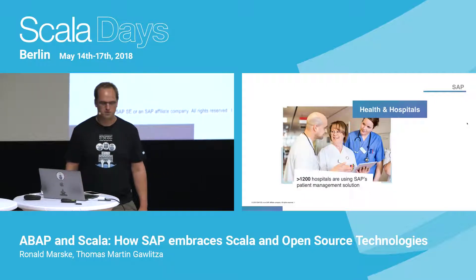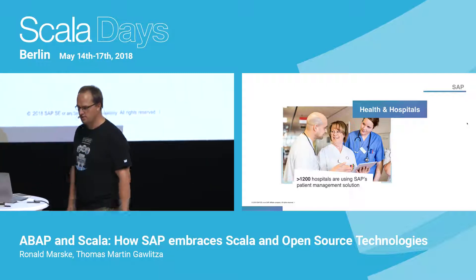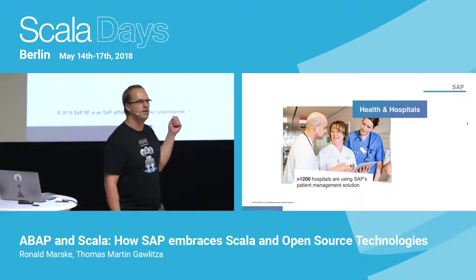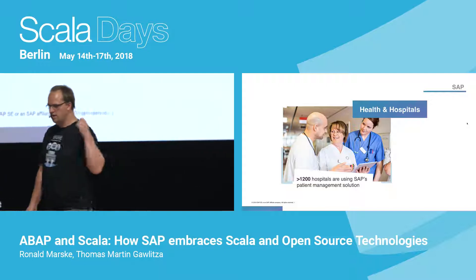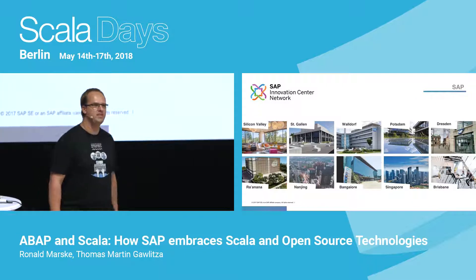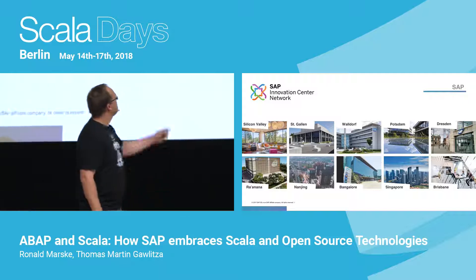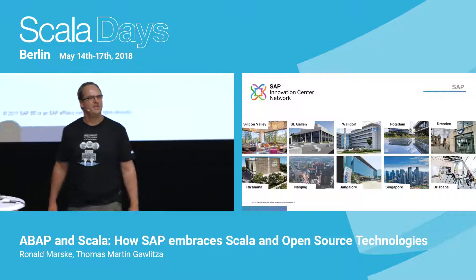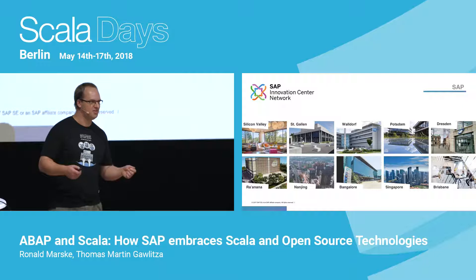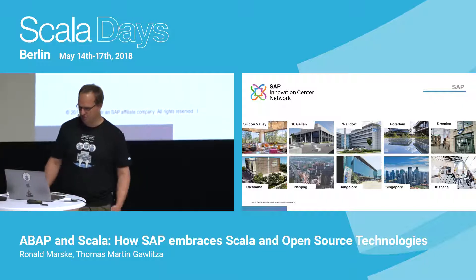Also relevant to me: we work in the healthcare business, and our healthcare solutions are used in more than 1,200 hospitals. The Innovation Center has 10 amazing locations — it's a good place to work. The most amazing location is of course Potsdam, very close to Berlin. Many people working in Potsdam actually live in Berlin. This is where our team is located, and also Ronald's team.